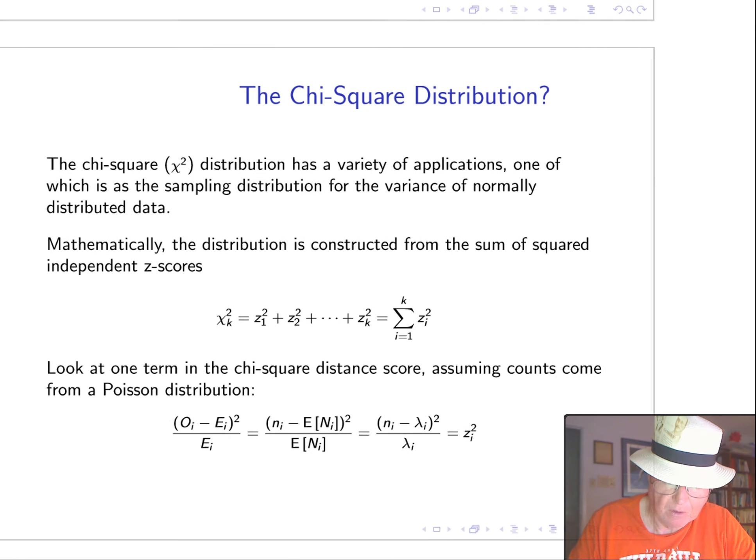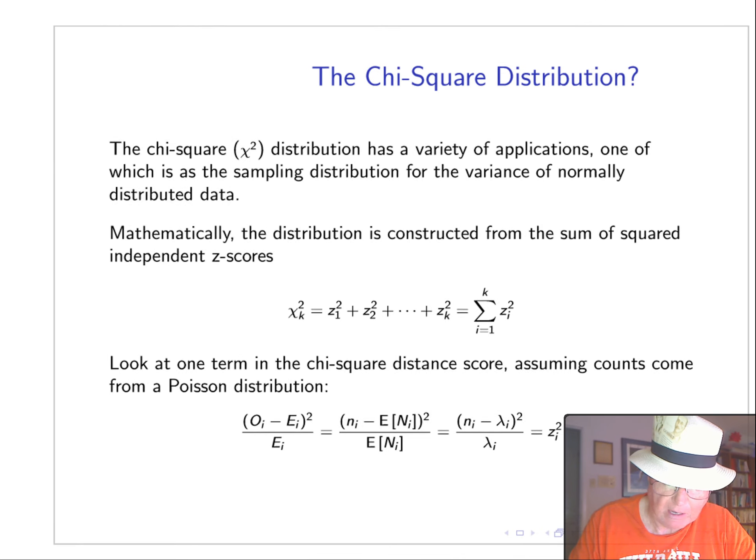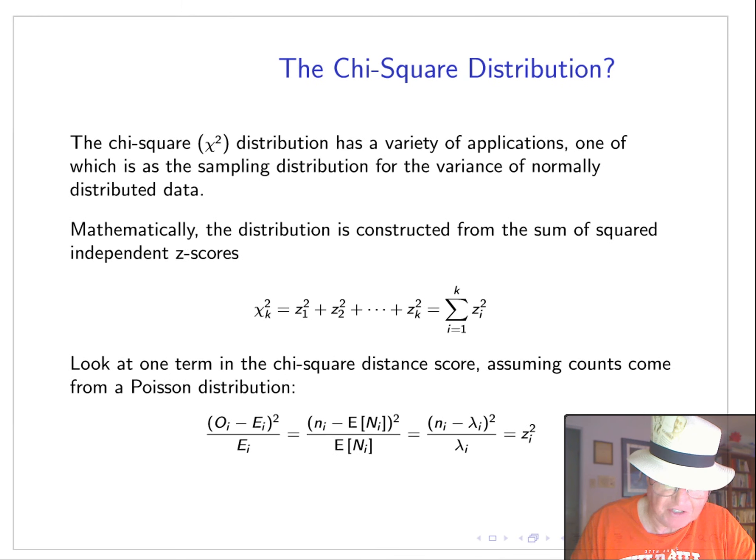Now, how do we do a test on this score? Well, we use what's called the chi-square distribution. It's got a variety of applications. One of them is the sampling distribution for variance of a normally distributed data. The chi-square score basically takes the sum of the squares of independent z-scores, just adds them up, and we get a chi-square random variable.